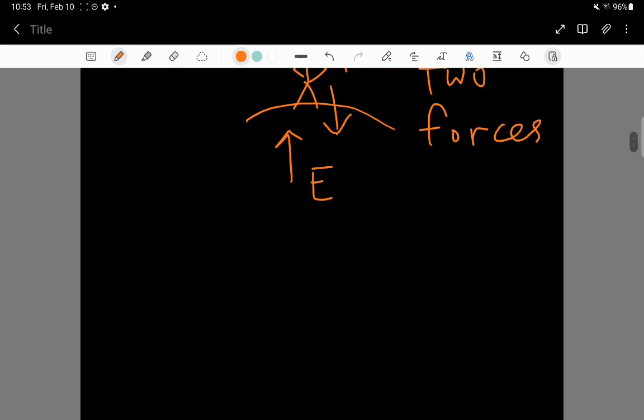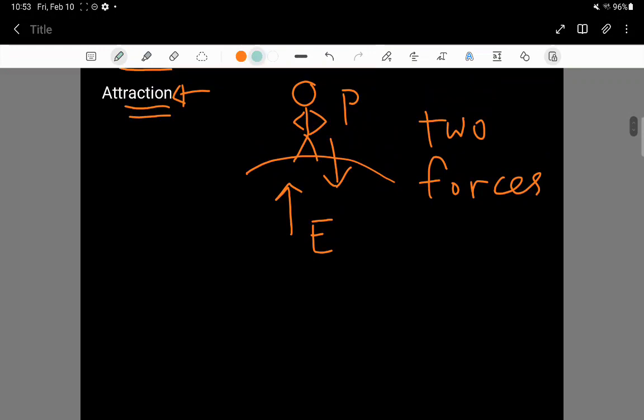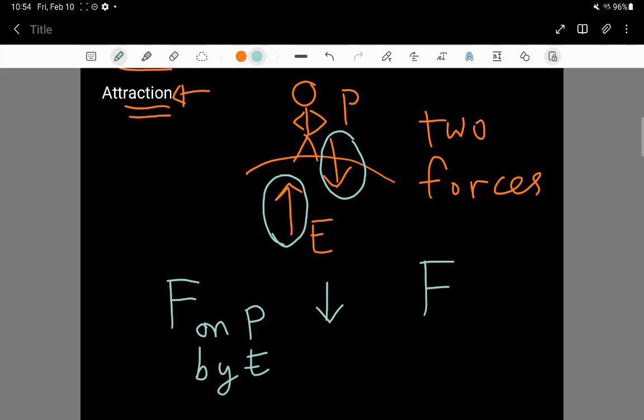One of the forces is a force on the person by the earth. And that force, in this case, is this downwards arrow. There's another force, though. It's the force, it's this arrow here. It's the force on the other object, which in this case is the earth, by the object, the person. And that force, if you look, I just circled it, it's upwards.